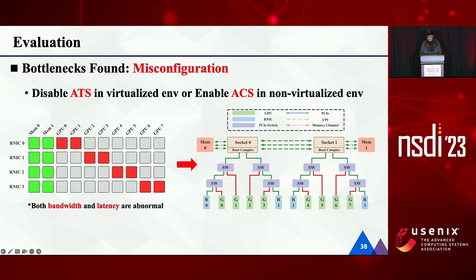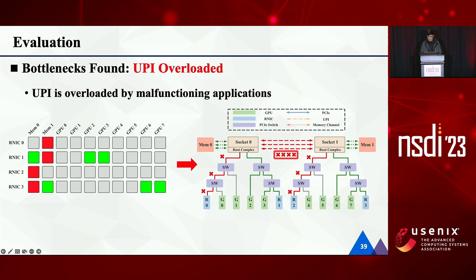This slide shows that misconfigurations lead to both intra-host latency and bandwidth degradation. When ATS is disabled in a virtualized environment or ACS is enabled in a non-virtualized environment, the PCIe latency between the R-NIC and its affinity GPU will increase, further leading to intra-host bandwidth degradation. As both the latency and bandwidth between the R-NIC and its affinity GPU are abnormal, we can infer that the root cause lies in the misconfigurations. In another case, the UPI link is overloaded by some malfunctioning applications, and HostPing could infer that the UPI link is abnormal and diagnose the root cause as the overloaded UPI link.